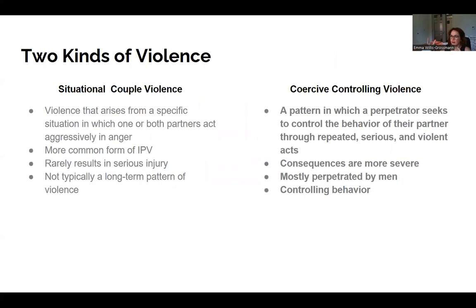When we talk about intimate partner violence — IPV — there are typically two types of violent patterns. The first is situational couple violence, which occurs when one or both partners act violently in anger during a specific situation. For example, a woman finds out her partner has been cheating and slaps him during the confrontation, or a male partner pushes his partner in anger during a fight. This form of IPV is equally common with men and women, and both are equally likely to report engaging in it.